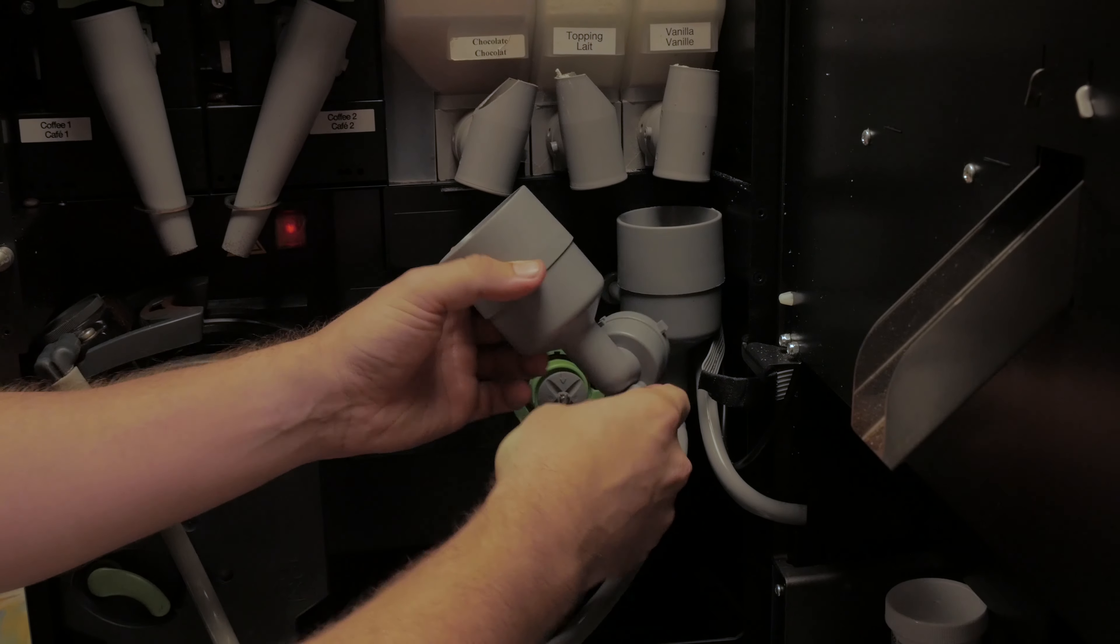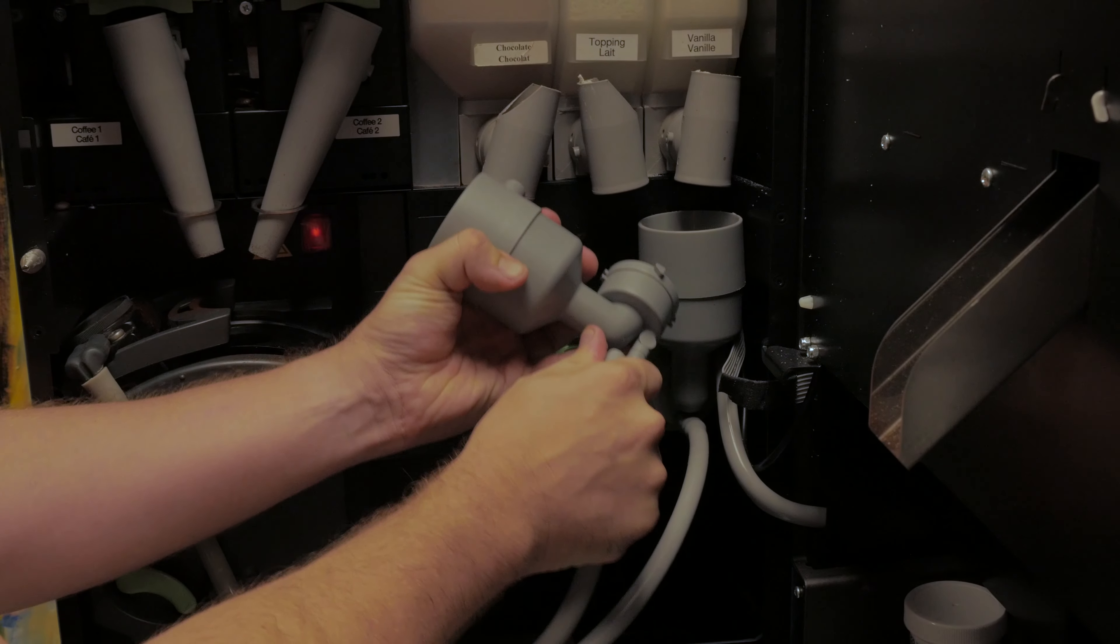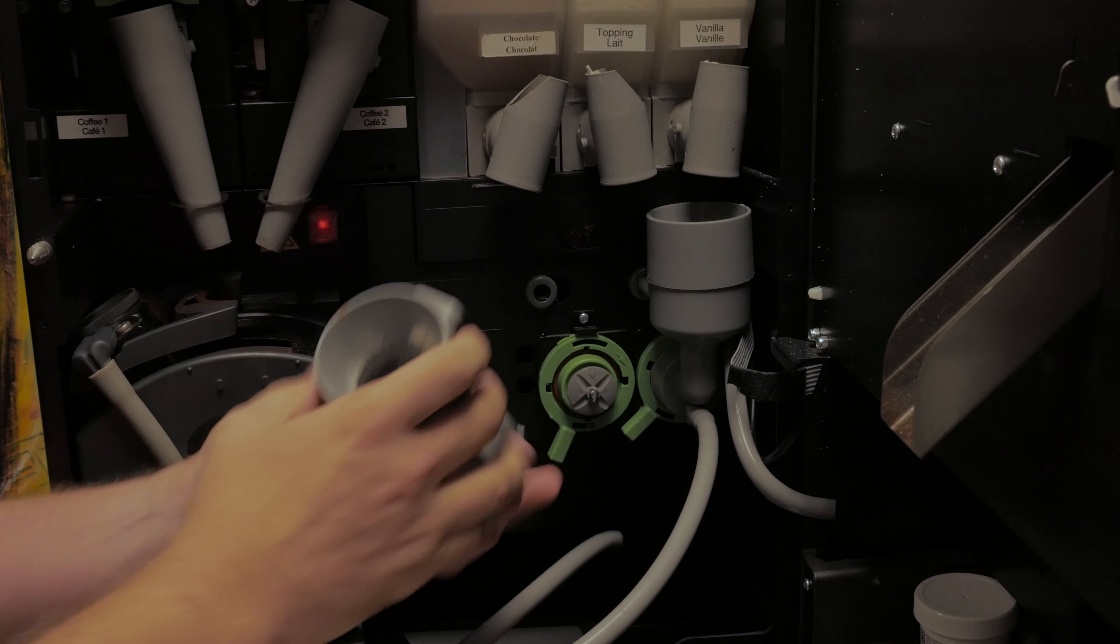You will then pull out gently and then at that point you can remove the tubing and you can hand wash this in the machine. Make sure there's nothing there.